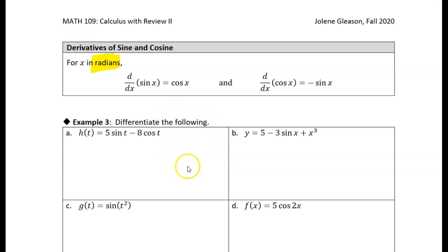Let's do some practicing with applying the derivatives of sine and cosine. We have all of our usual rules: we know how to take the derivative of a sum or difference of functions, a constant multiple of a function, the chain rule, the product rule, and the quotient rule. We're just adding two new functions we know the derivative of — sine and cosine.